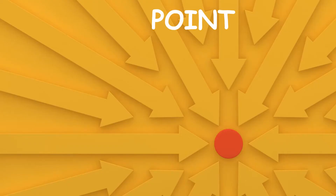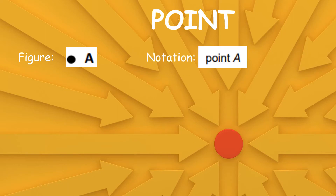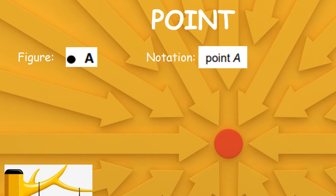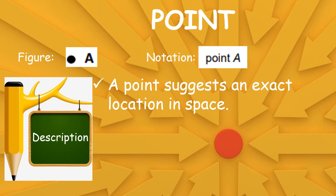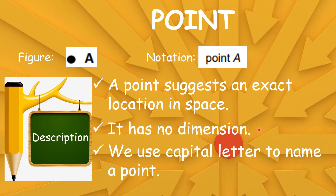Let's start with the definition of a point. In figure, we write Point A — the symbol for point is a dot and then capital letter A. In notation, we write Point A. A point suggests an exact location in space. It has no dimension. We use a capital letter to name a point.